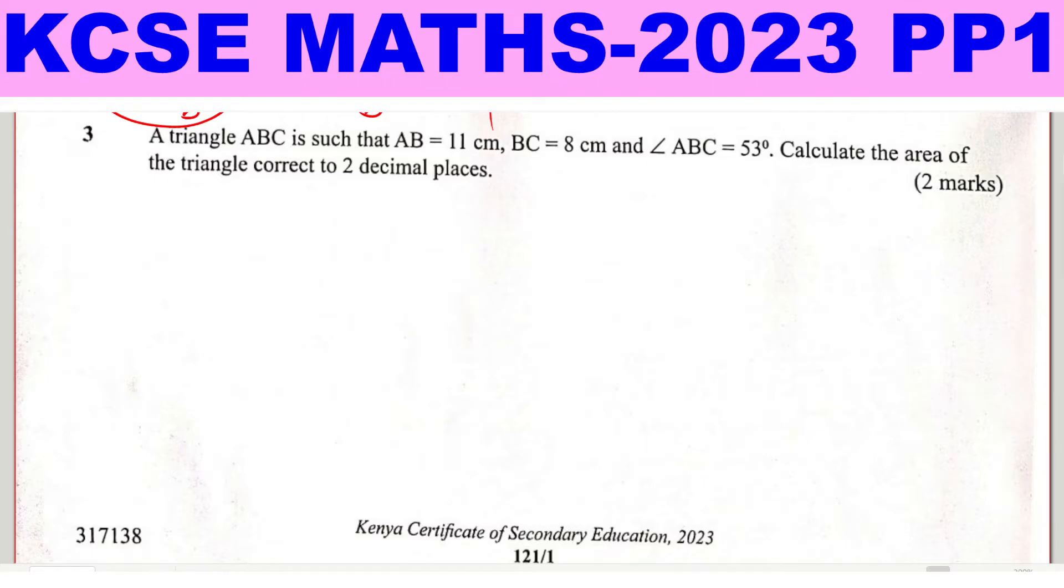We first sketch this triangle. So triangle ABC, just the sketch. So ABC. AB is 11 cm, BC is 8 cm, then angle ABC, this is the angle, 53 degrees.